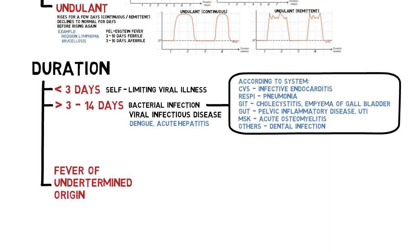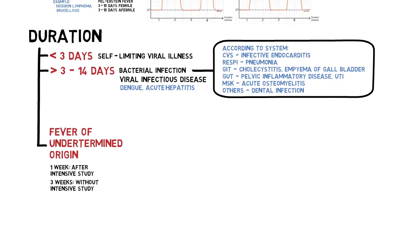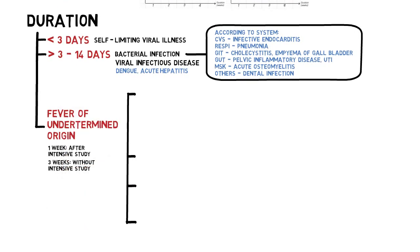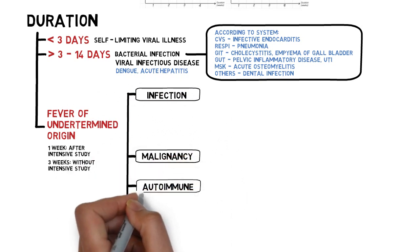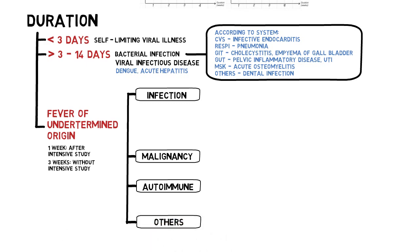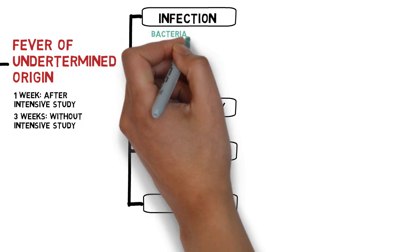Fever of undetermined origin is defined when the cause of fever is not known after one week of intensive clinical and laboratory investigation — for example when a patient is admitted to hospital and the cause is still unknown after a week. It is also called fever of unknown origin if the fever lasts more than three weeks without intensive study, though some clinicians use two weeks as the cut-off point. For this category, we must consider non-infective causes such as malignancy and autoimmune disease.